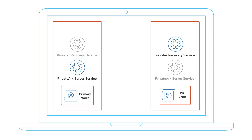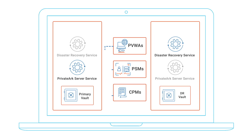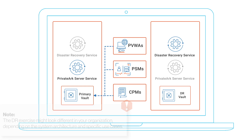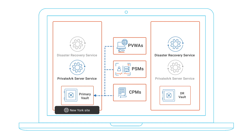In the following exercise, the PVWAs and PSMs have all been configured to automatically failover. Note that manual failover of the CPM will not be tested in this exercise. During the exercise, the roles of the two vaults will be reversed twice. To keep track of which vault is primary and which vault is DR, we will refer to the original primary site as the New York site and the original disaster recovery site as the San Francisco site.